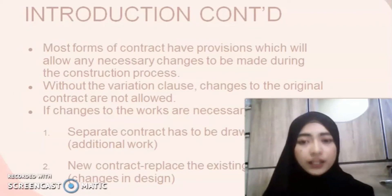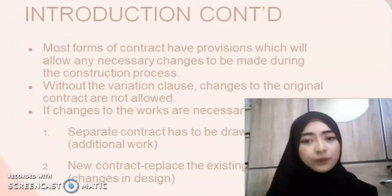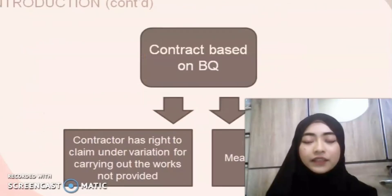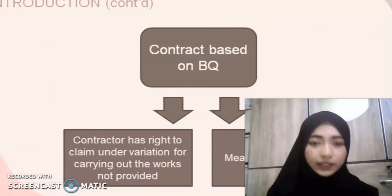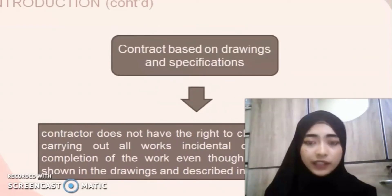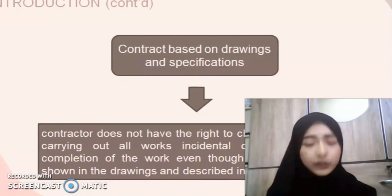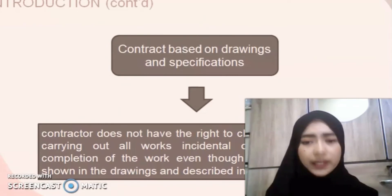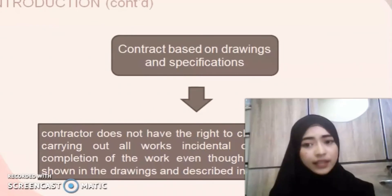Without the Variation clause, changes to the original contract are not allowed. If changes to the work are necessary, a separate contract has to be drawn up and a new contract will replace the existing contract. If the contract is based on the BQ, the contractor has the right to claim under Variation for carrying out all the works incidental or necessary for the completion of the work, even though those works are not shown in the drawings or described in the specifications.